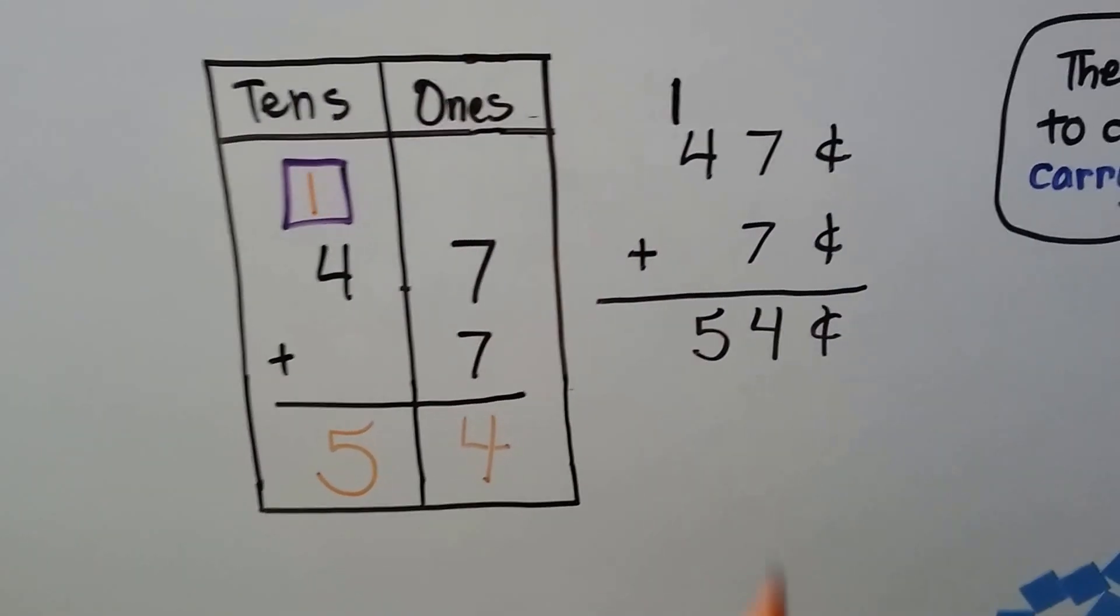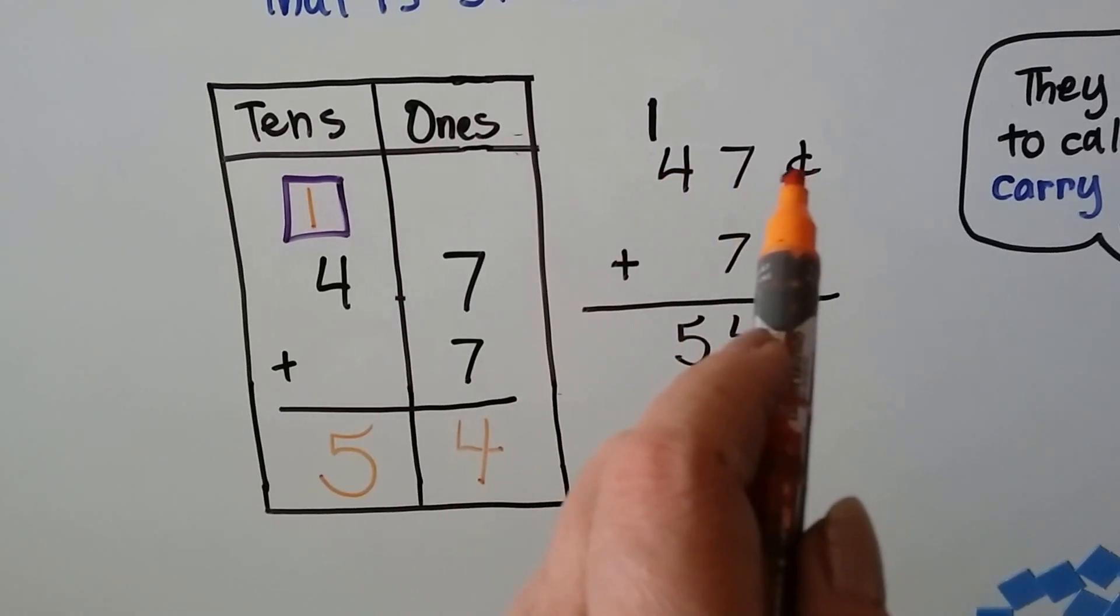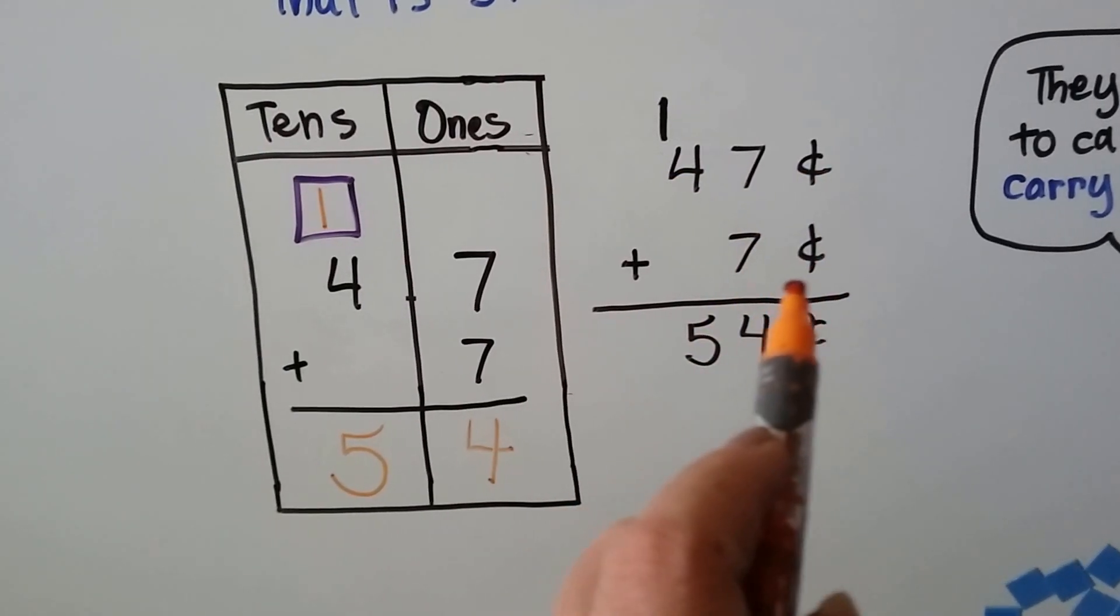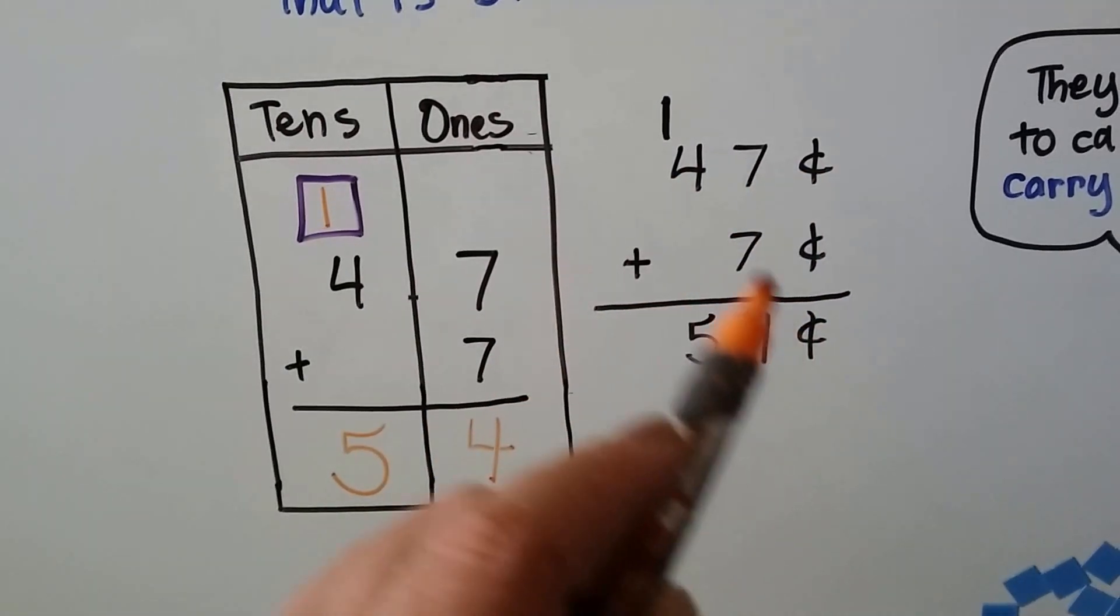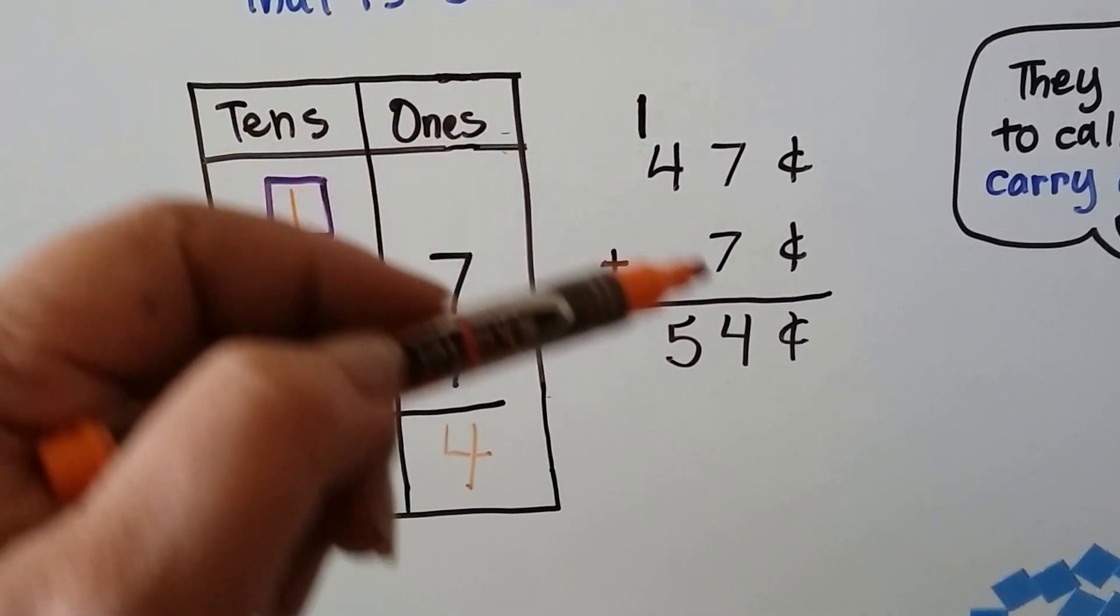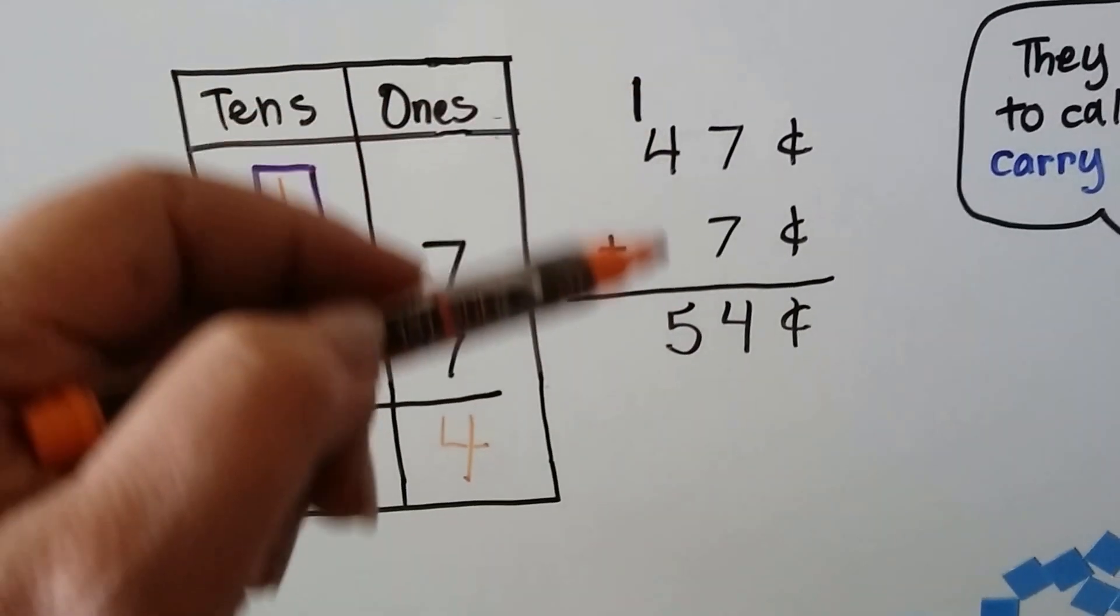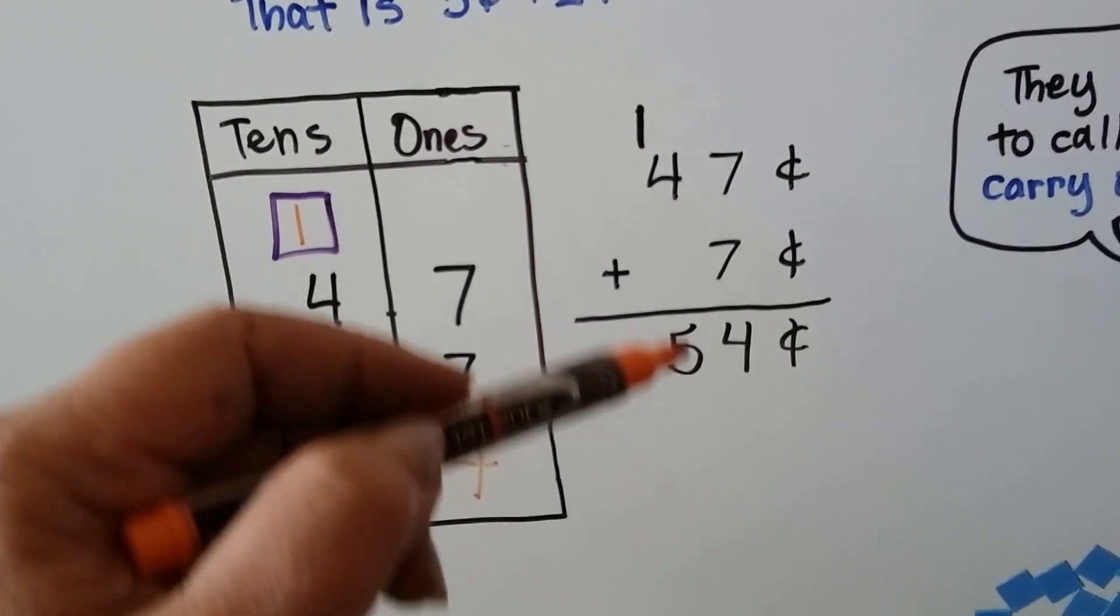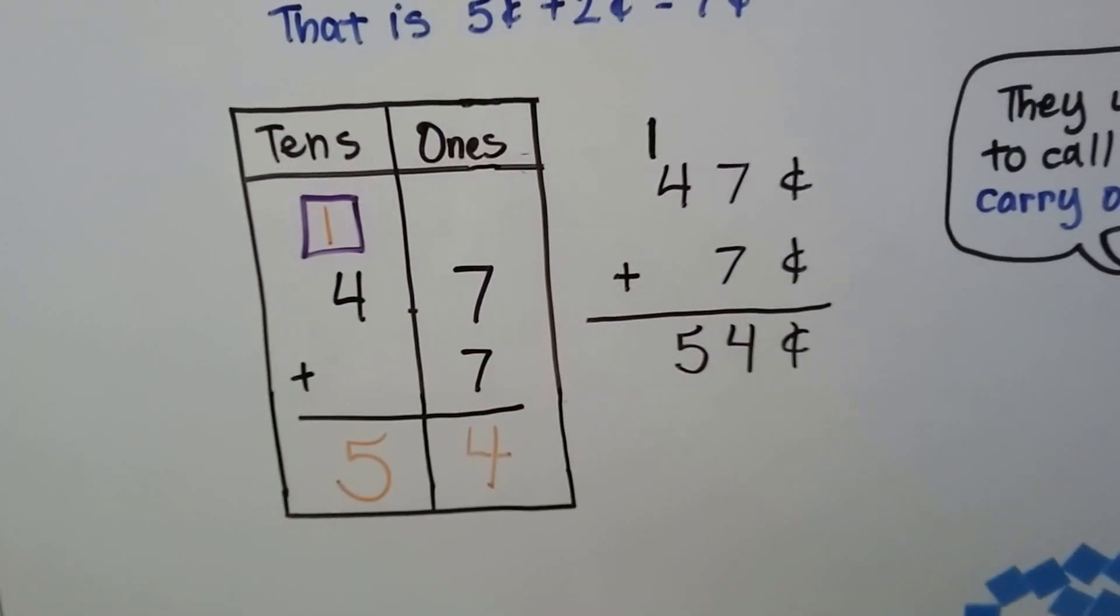Now, we add the 4 and the 1, and we get a 5. And that's 54. We add 47 cents plus 7 cents. 7 plus 7 is 14. We regroup the 1, 10, to the tens place, put the 4 down, and then we add the tens place. See? And 4 plus 1 is 5.